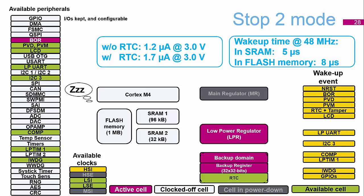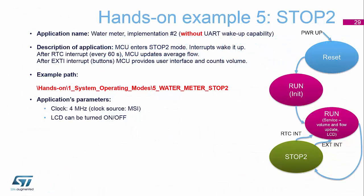There is a slight increase in startup time — rather than 4 to 6 microseconds we're now at 5 to 8 microseconds — but we can still jump straight to 48 MHz of processing power. Hands-on number 5 is essentially the same application but now only the RTC and the button trigger the water meter. You can also enable or disable the LCD in this mode to reduce current further.